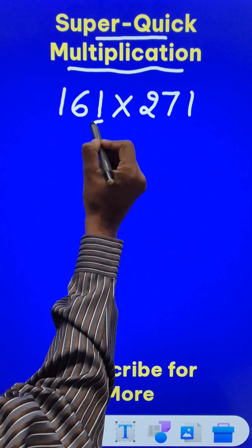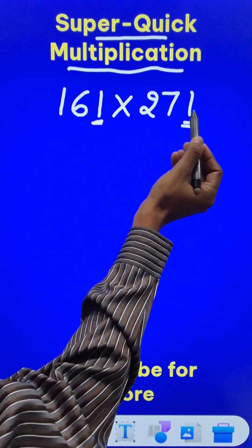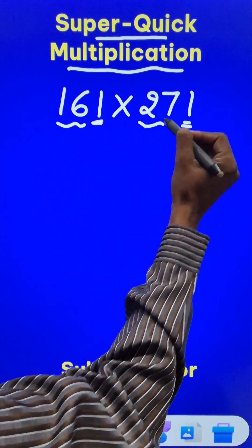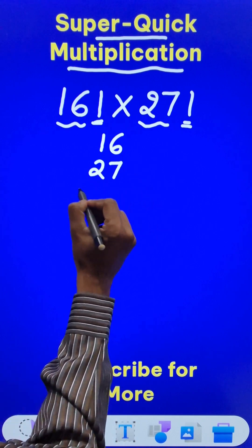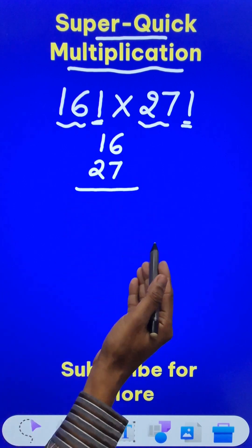So here you can see both the numbers end in 1. So apart from the 1, you have a 16 here and a 27 here. So the first thing is just multiply 16 and 27 using the Vedic maths approach of vertically and crosswise.